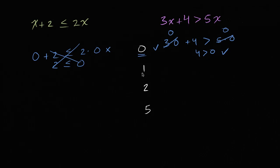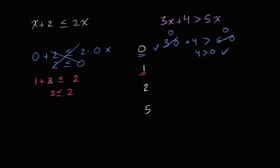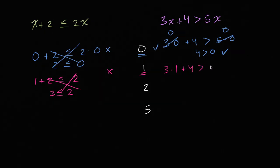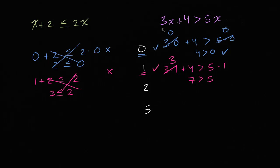Now let's try out one. To satisfy the first inequality, one plus two needs to be less than or equal to two. One plus two is three. Is three less than or equal to two? No, three is larger than two, so this does not satisfy the left-hand inequality. What about the right-hand inequality? Three times one plus four needs to be greater than five times one. Three plus four is seven, and seven needs to be greater than five — well, that's true. So both zero and one satisfy three x plus four is greater than five x, and neither satisfies x plus two is less than or equal to two x.